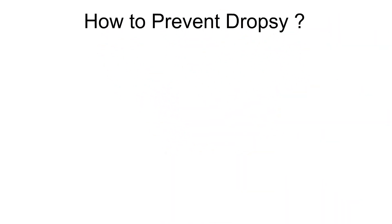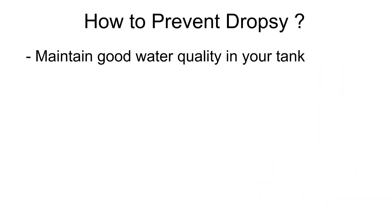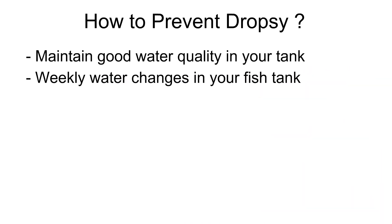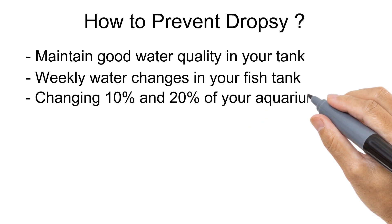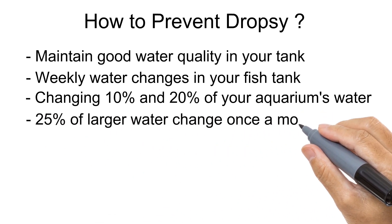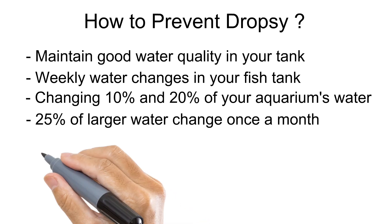To prevent dropsy, as is true of most tropical fish diseases, the best way is to maintain good water quality in your tank by staying on top of routine maintenance tasks. Perform routine weekly water changes, changing out between 10% and 20% of your aquarium's water volume. You should also perform a larger water change of 25% of the tank volume once a month.